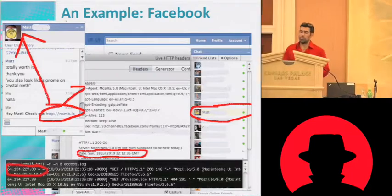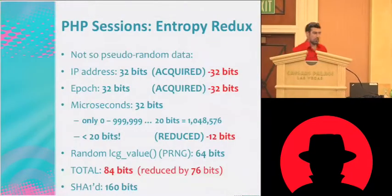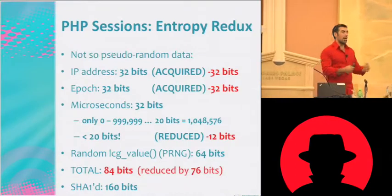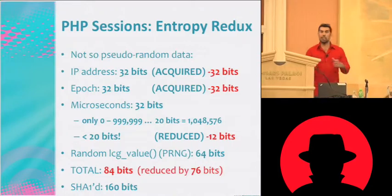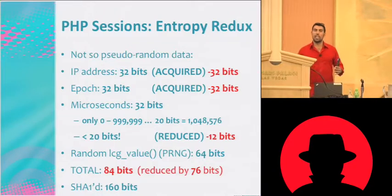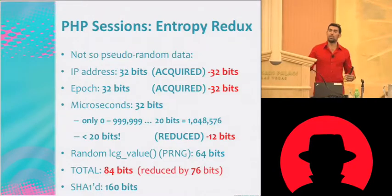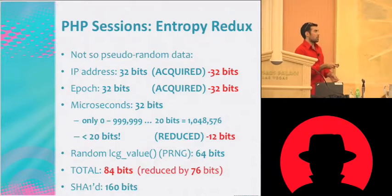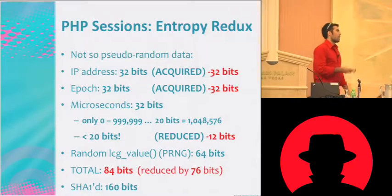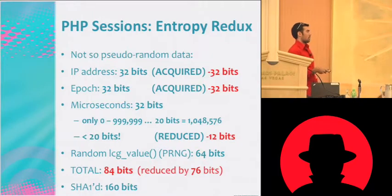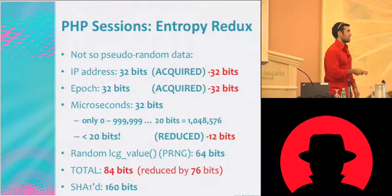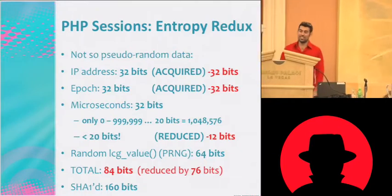So we've just acquired his IP address — 32 bits — and the epoch. Not just the epoch on my client side, but the server epoch, because it's the server generating these cookies. We just reduced the epoch from the server. It sent us that date, and we reduced another 32 bits. Plus that 12 bits from microseconds, we've just reduced 160 bits of random data to 84 bits.